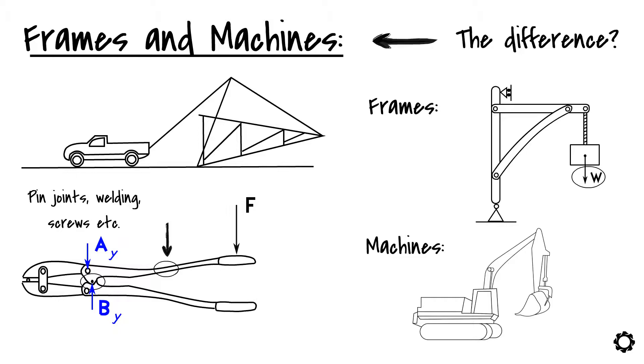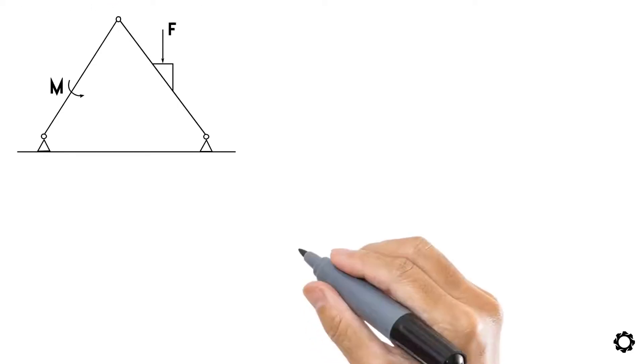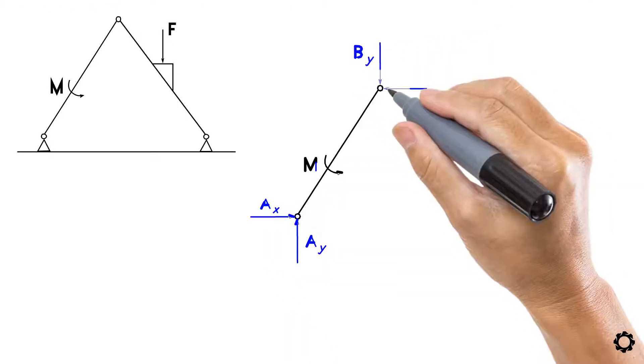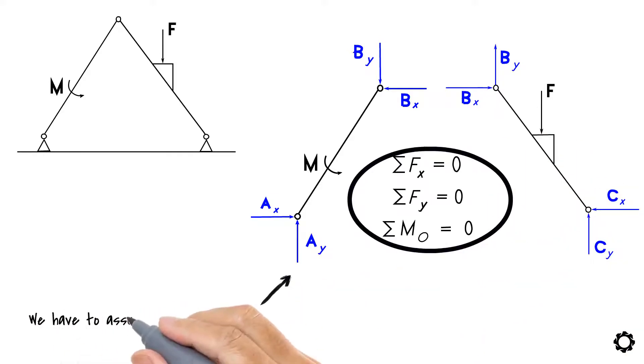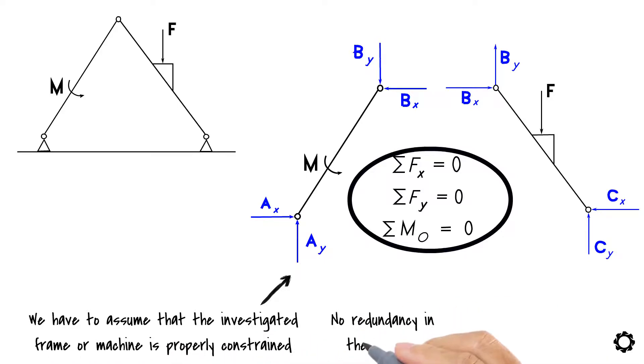If we would want to analyze these kinds of structures, we could do it by determining the forces applied at the joints and supports in each member by using the equations of equilibrium which we have established during the course. But doing so, we have to assume that the investigated frame or machine is properly constrained and there is no redundancy in the system.